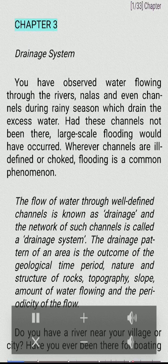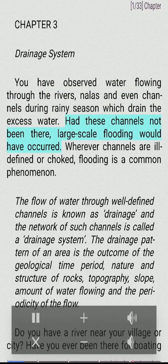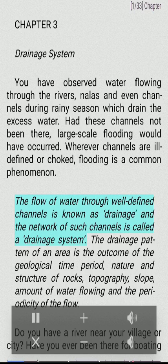Chapter 3: Drainage System. You have observed water flowing through the rivers and channels during rainy season, which drain the excess water. Had these channels not been there, large-scale flooding would have occurred. Wherever channels are ill-defined or choked, flooding is a common phenomenon. The flow of water through well-defined channels is known as drainage, and the network of such channels is called a drainage system.